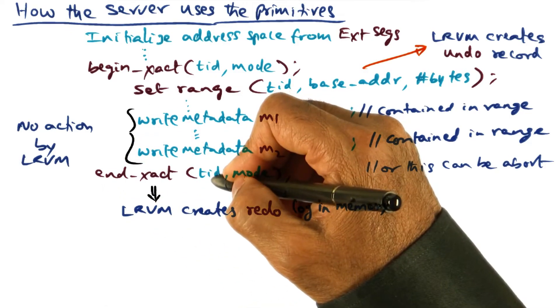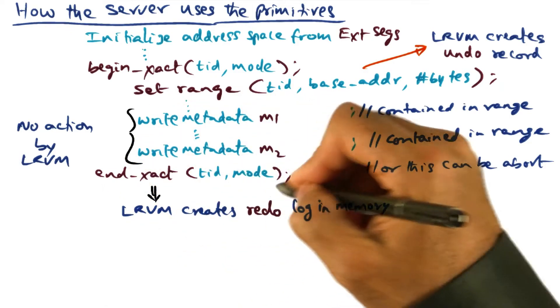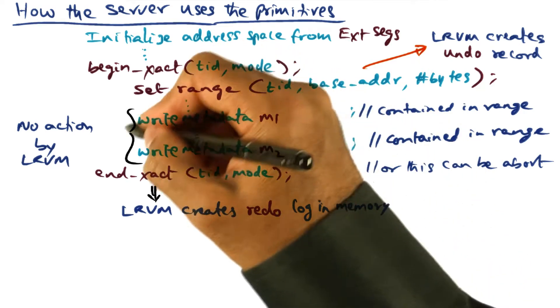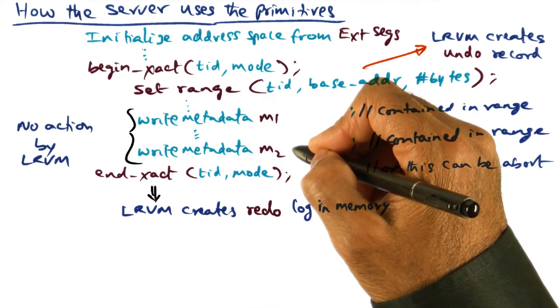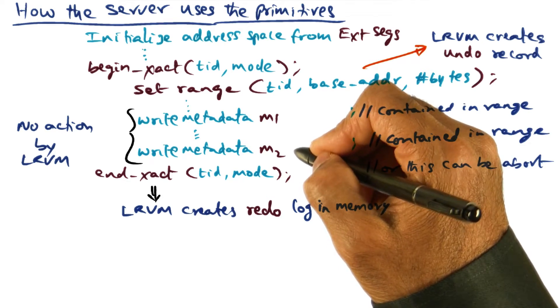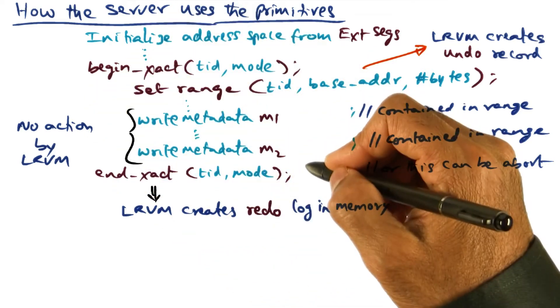So finally, if the transaction commits by calling an end transaction, at that point, all the changes that have been made to persistent data structures have to be written to the log segment that records the redo logs for this application.